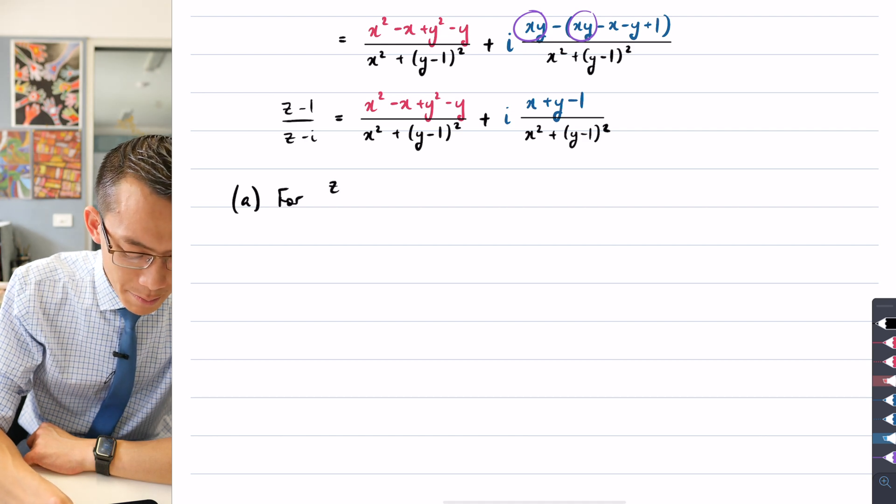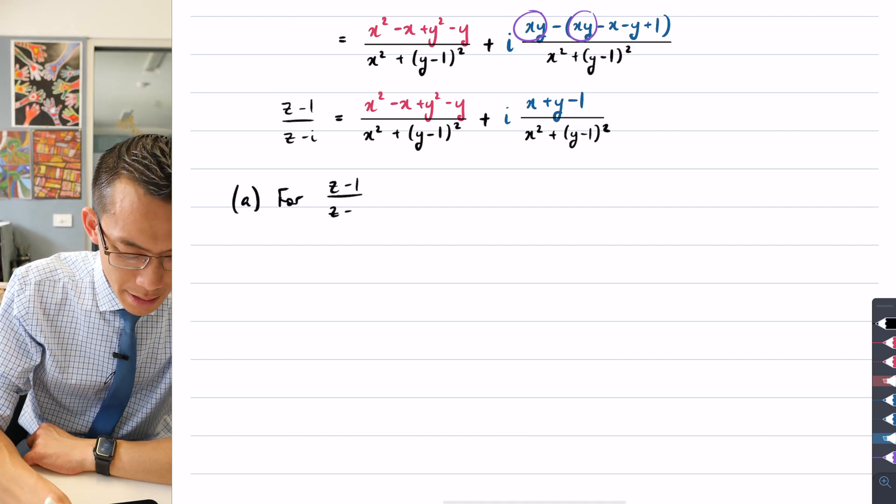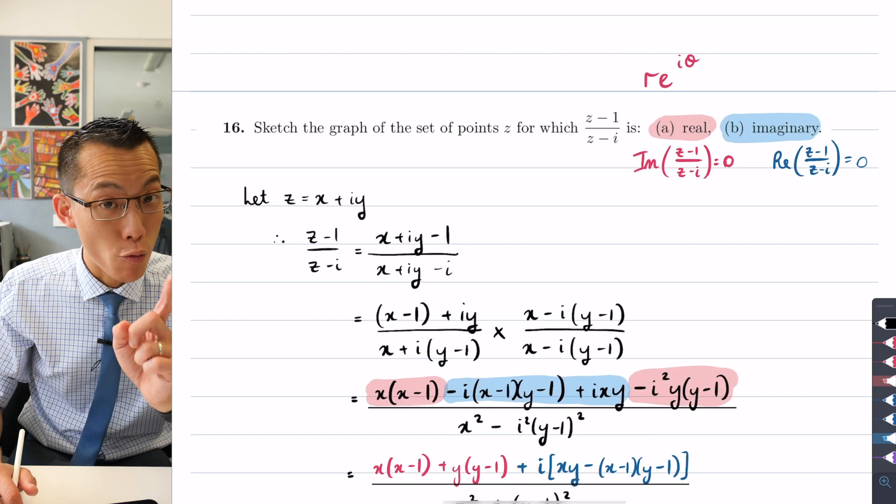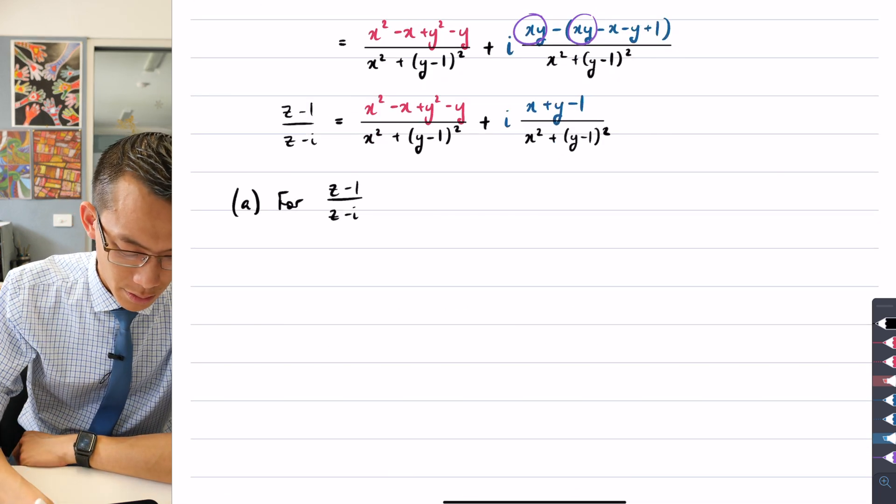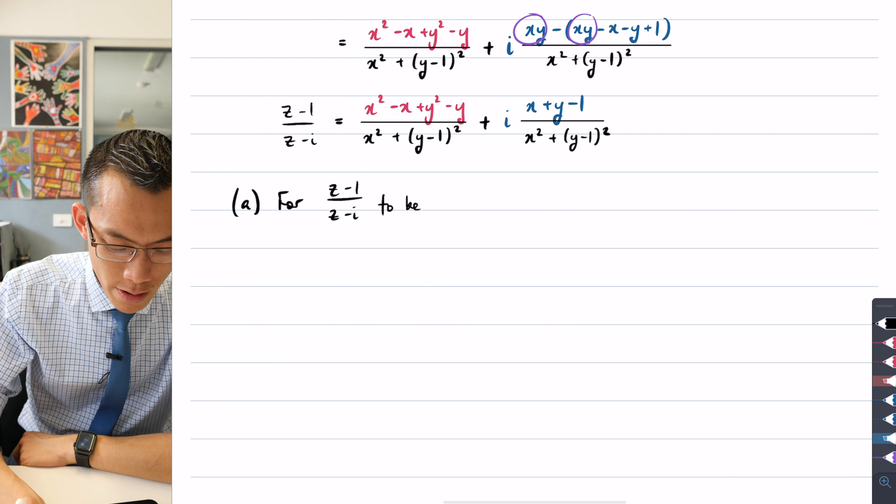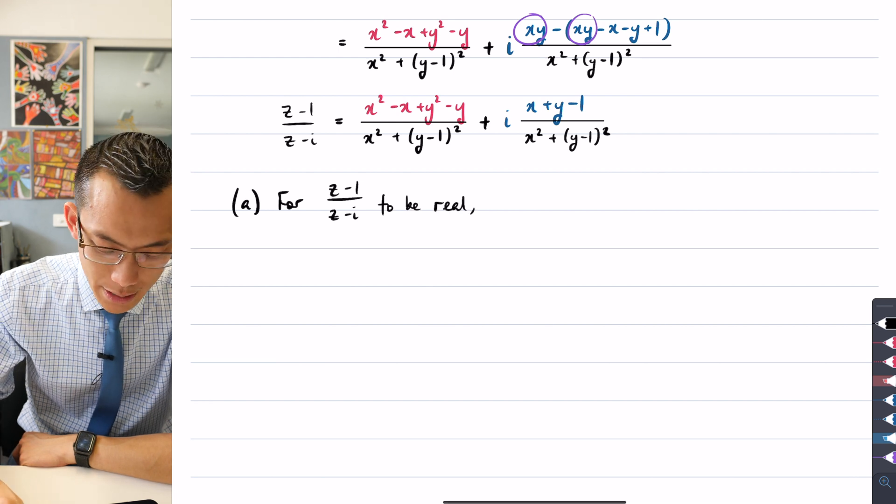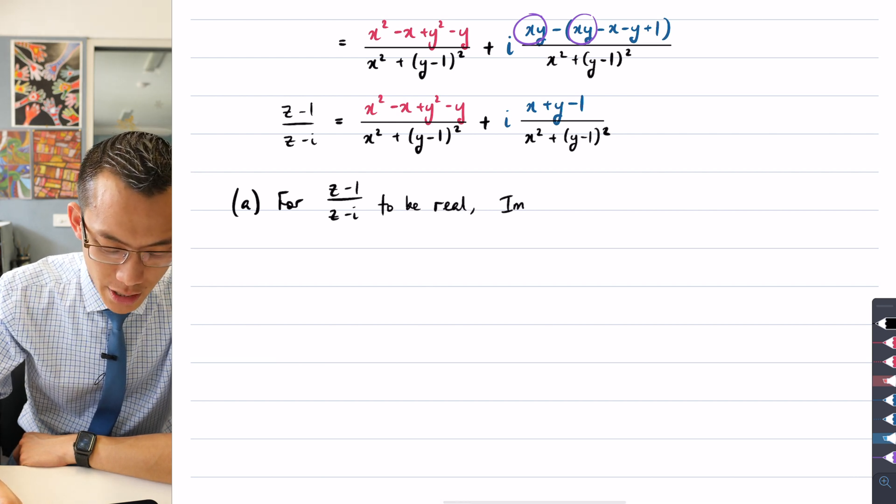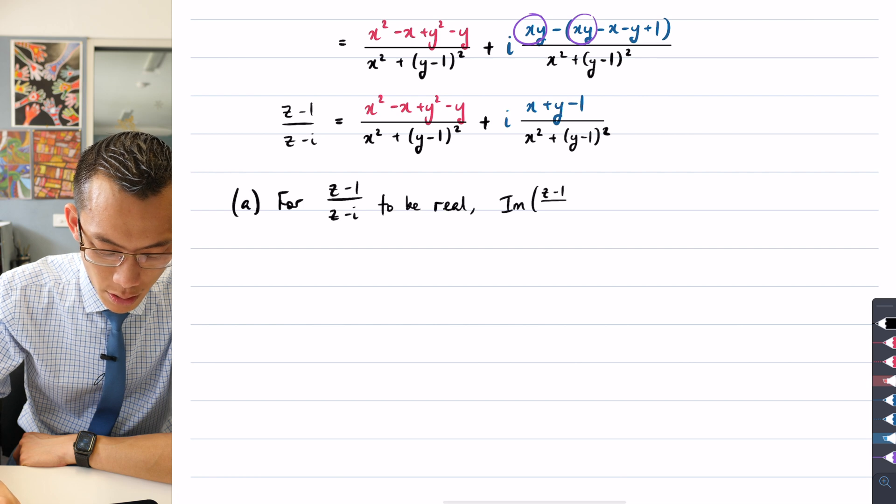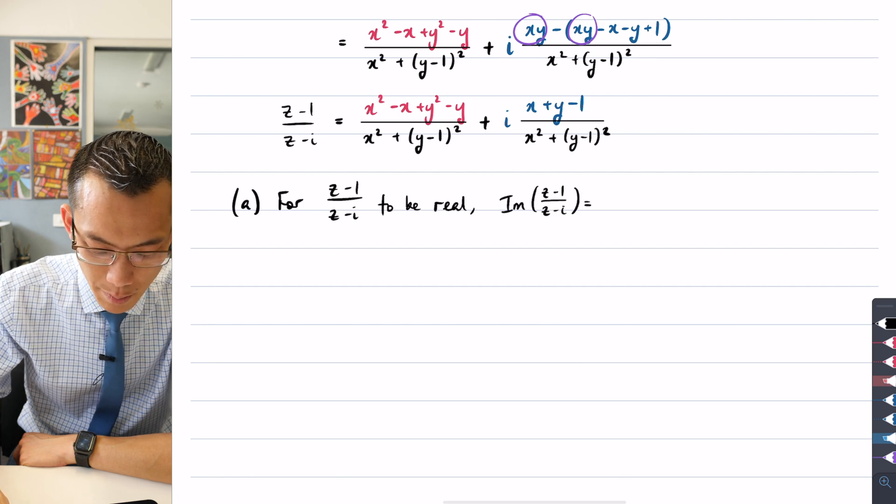For z minus 1 over z minus i to be real, that's the first one I'm doing, so I'm going to write to be real. What we need to say is that the imaginary part of z minus 1 over z minus i, that has to be zero.